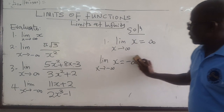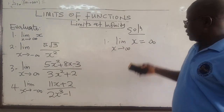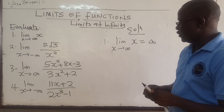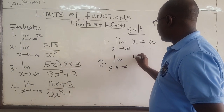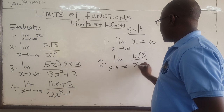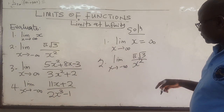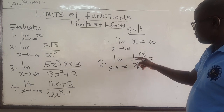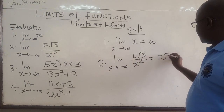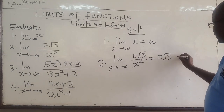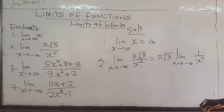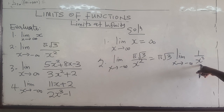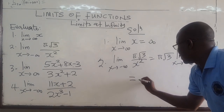These are some basic examples that should help you understand the concept. Number one is easy: the limit as x approaches infinity of x is just infinity. Number two: the limit as x approaches negative infinity of π√3 all over x squared. We can use the laws of limits — π√3 is just a constant, so we can pull it out. The π is just there to scare you.